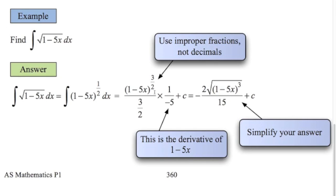Now I've just got to tidy this up. Divided by 3 over 2 is the same as times by 2 divided by 3. So we're going to have a 2 on the top line, a 3 down here, times the minus 5, giving negative 15 on the bottom line — I'll put the negative out the front. And power of 3 over 2 means square root of 1 minus 5x to the power of 3. And of course we always add c onto the end.